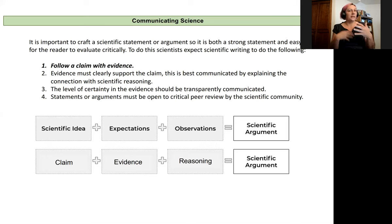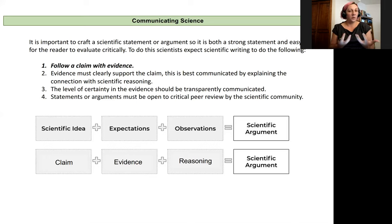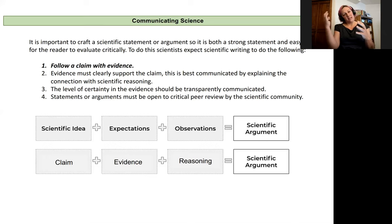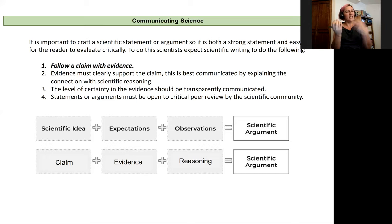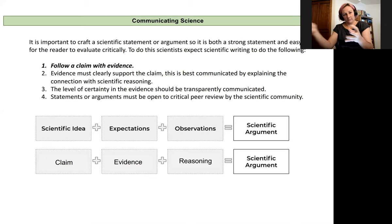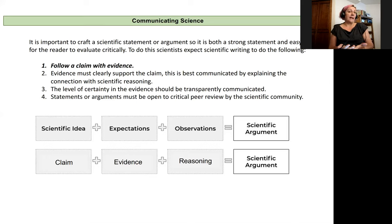Those are the pieces that make up scientific writing — and this is a journey for your entire career to improve and get better at writing in a scientific manner. When crafting a scientific argument, you can start with a scientific idea and expectations, then the observations — which are really the evidence for that idea and the reasoning together. Another way to do this is claim-evidence-reasoning, or CER: you state a claim, provide the evidence for that claim, and then connect them with reasoning. You say, 'My evidence supports this claim because...' and that creates a scientific argument. If you're already familiar with CER format, great; if it's brand new to you, there's a great Bozeman Science video on claim, evidence, and reasoning formatting in scientific writing.